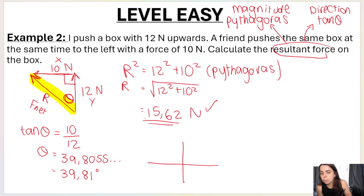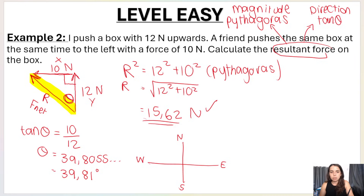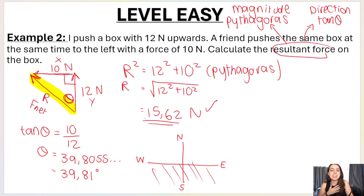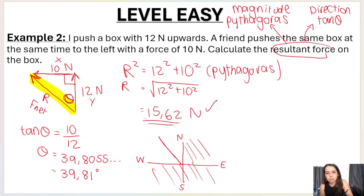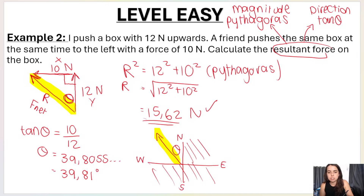Drawing the Cartesian plane with compass directions — north, east, south, west — in which quadrant does the resultant vector go? It's pointing up and to the left, not down and not to the right, so it's in the upper-left quadrant. Theta is above the horizontal line in that quadrant.